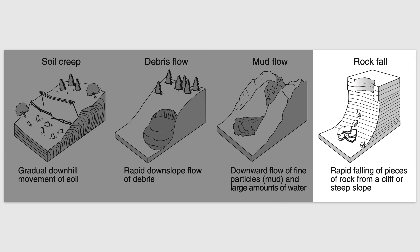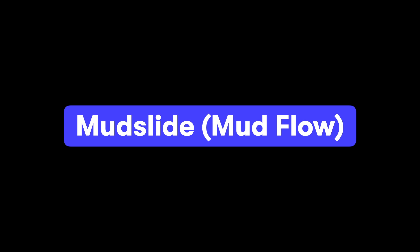Finally, we have a rock fall, often called a rock slide. This is pretty self-explanatory — the rapid dropping or falling of pieces of rock, usually off of a cliff or a very steep slope. We're going to go through each of these and look at some real-world examples so you can visualize what these processes look like in nature. We'll begin with a mudslide or mud flow.